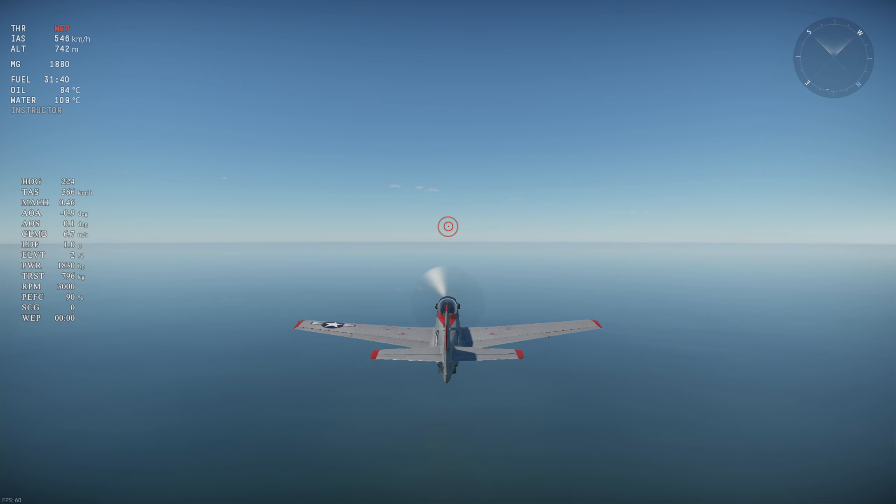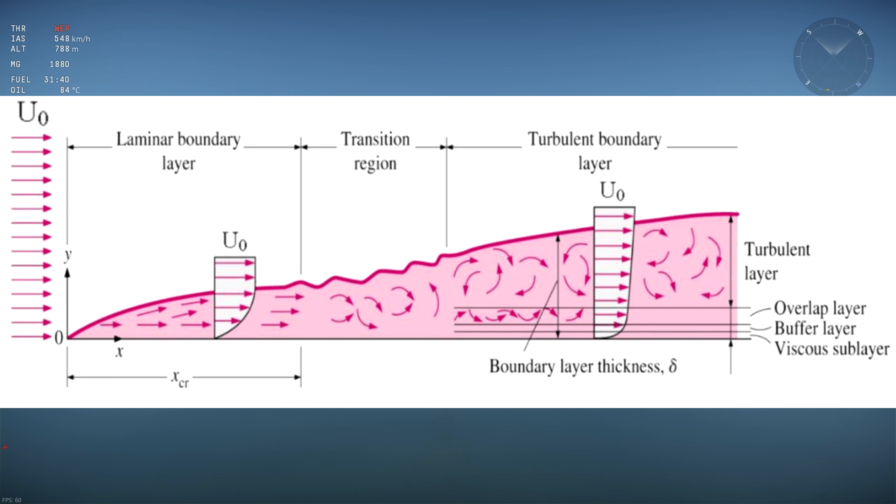To understand skin friction drag, we must first understand the boundary layer and what happens inside the boundary layer. Boundary layers are created whenever a fluid comes into contact with an object, in this case a flat plate.